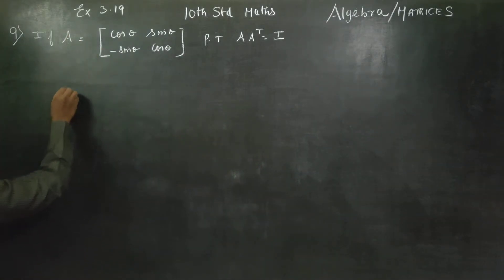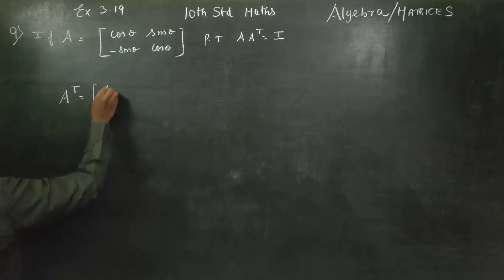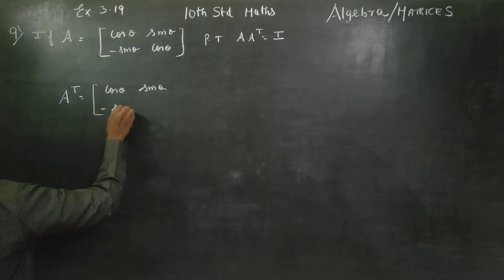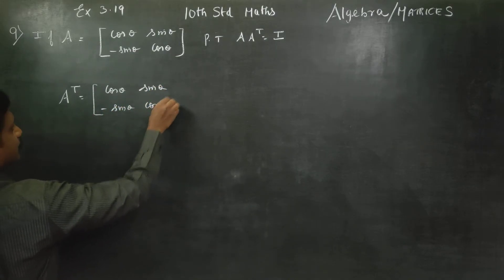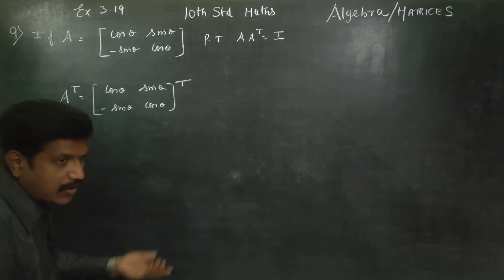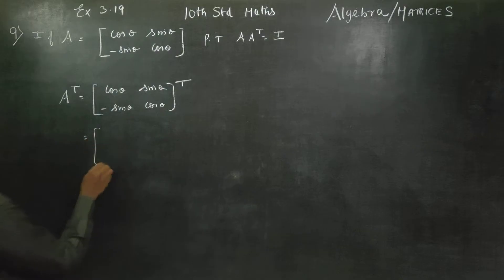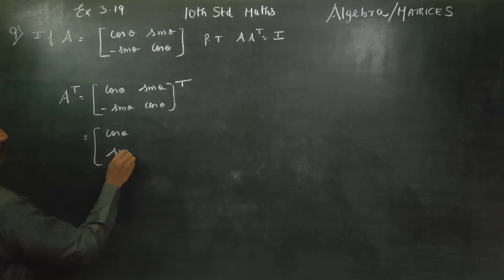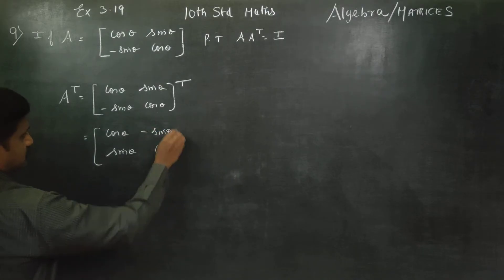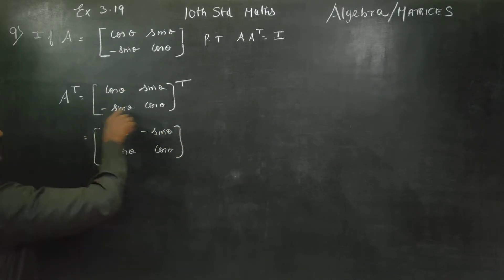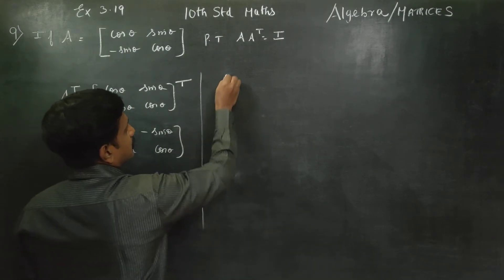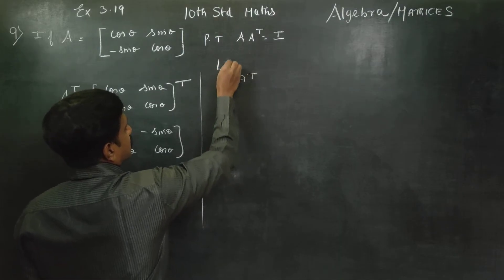First, A is given. To find A transpose, when we take the transpose of A matrix, rows become columns. So A transpose becomes: [[cos theta, -sin theta], [sin theta, cos theta]]. This is our LHS.